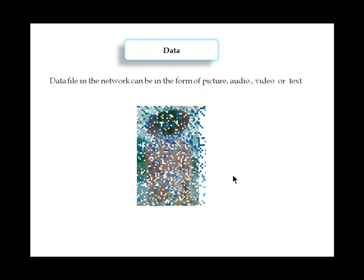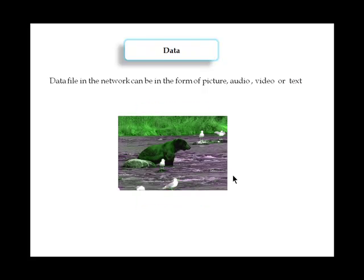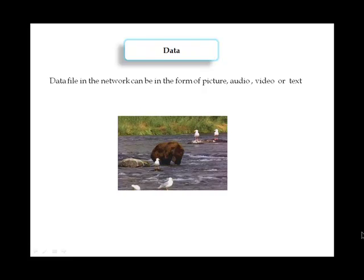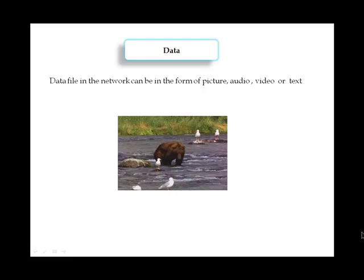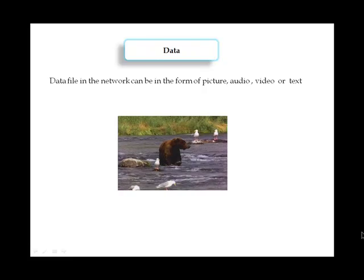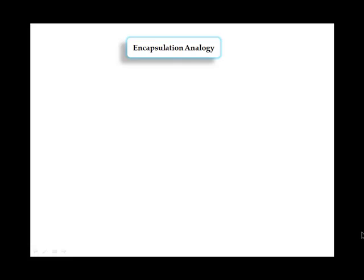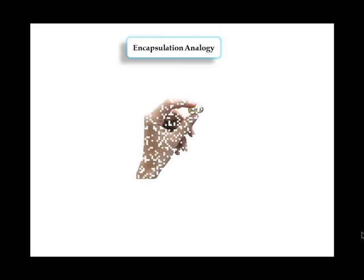Data files in the network can be in the form of picture files, audio files, video files, or even text files. No matter what format the data is being sent across the network, it is expected to be received just the way it was sent.